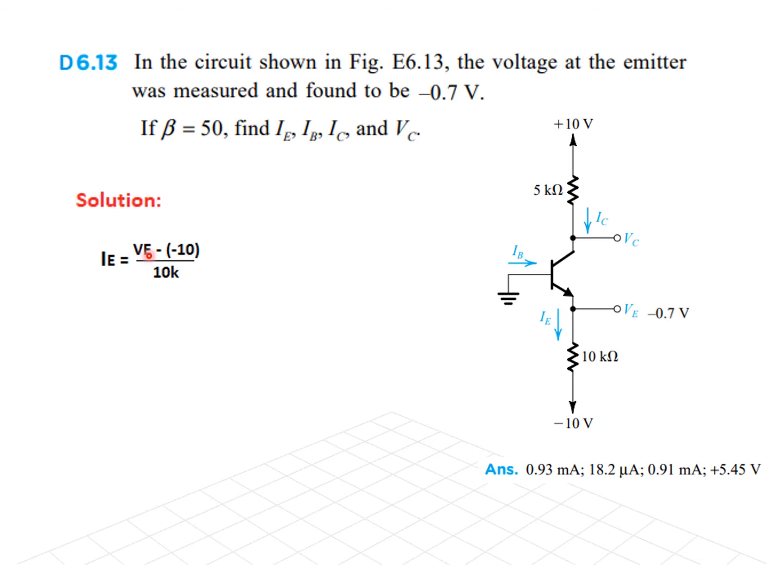Resistance we know this voltage is given. So, that will be the first step. IE is VE minus VE minus minus this divided by 10k. Putting in the value. So, it will be 0.93 mA. Then, we will use this formula to find the other parameters like IE we know. If you know alpha, then we can find IC.